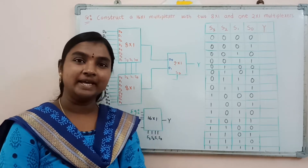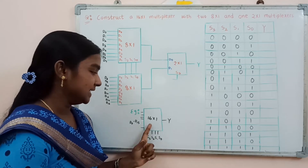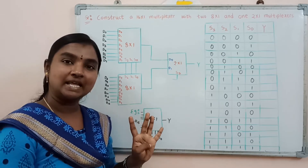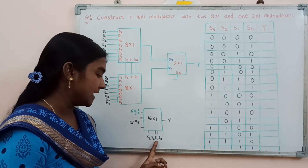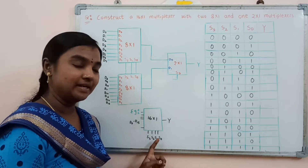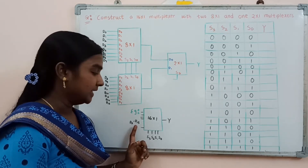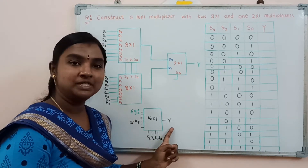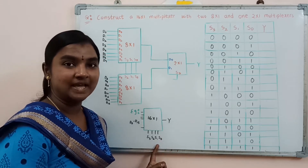If we consider the block diagram of the 16-to-1 multiplexer, it is in this manner. It consists of 4 selection lines: S3, S2, S1, and S0. The number of input lines range from D0 to D15, and one of the inputs can be passed through to the output side based on the binary data on the selection lines.